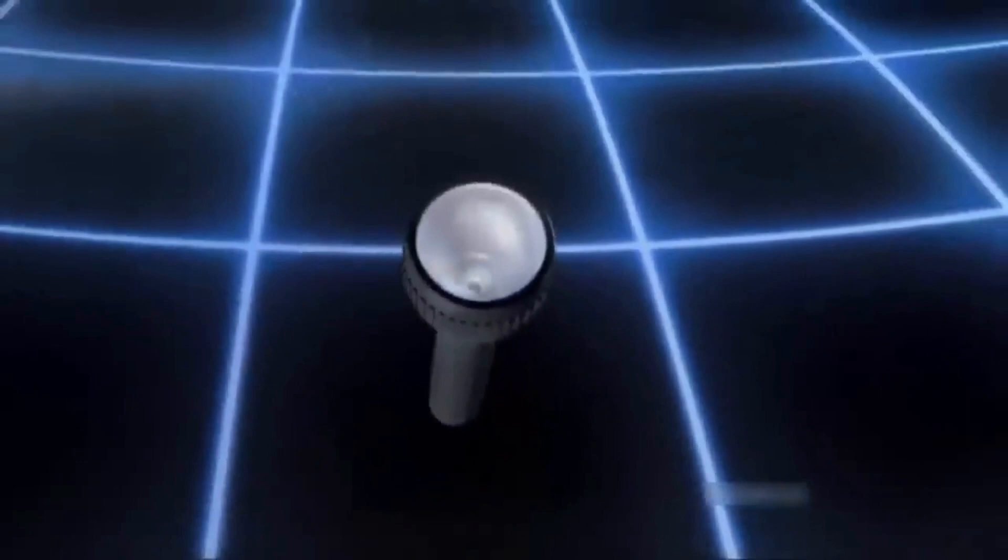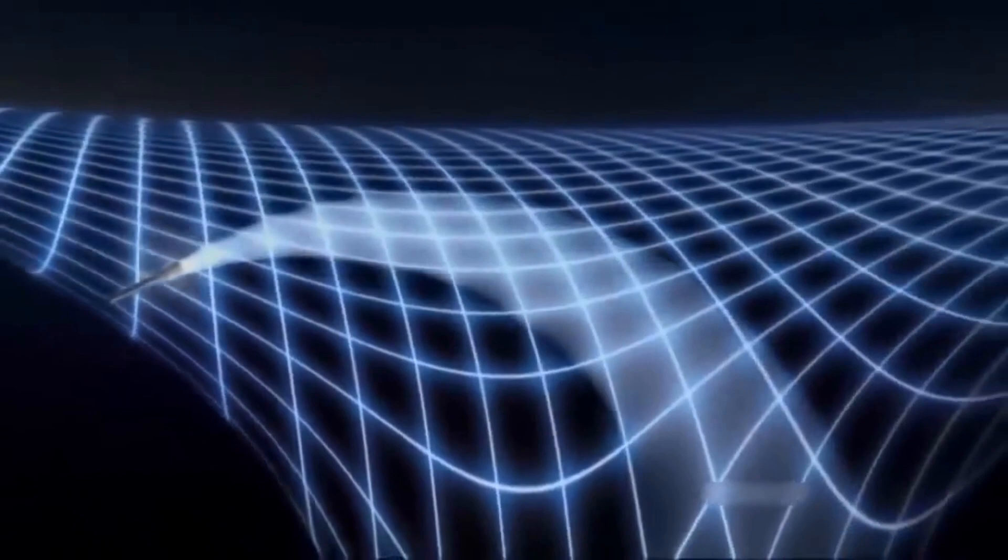So imagine a place where the gravity is so strong, turning on a flashlight. The light would go up and it would never leave. It would curve and come back down just the way a tossed ball on Earth. It's not traveling fast enough, it goes up, curves and comes back down.